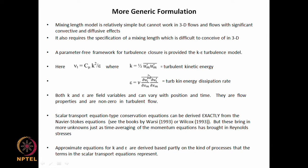Epsilon can be mathematically written as the kinematic viscosity nu times the time average of (∂u prime_i / ∂x_m)(∂u prime_i / ∂x_m) — these are the instantaneous velocity gradients of the fluctuating velocity components. The index i repeats, so it is always positive, and is zero only in non-turbulent flow. Here we are talking about velocity gradients, multiplied by kinematic viscosity, which brings in the idea of energy dissipation since viscosity has an energy-dissipation role.